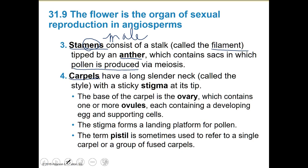Carpals have a long slender neck called the style and a sticky stigma at the tip. The base of the carpal is the ovary, which extends one or more ovules containing a developing egg and supporting cells. The stigma is on top and is a platform for pollen. The term pistil is used to refer to a single carpal or a group of fused carpals.